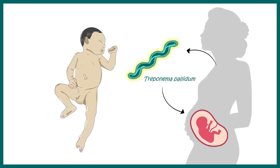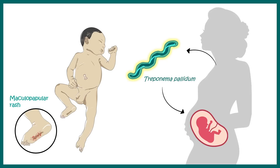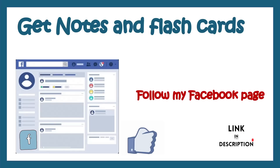If a baby is born with congenital syphilis, there can be several complications including maculopapular rash on the feet and palms, hearing defects, optic neuritis, saddle nose, and Hutchinson's teeth, among many other characteristic features. This video summarizes the necessary points regarding syphilis — its pathophysiology, microbiology, and how syphilis can be detected.